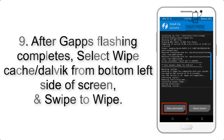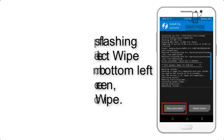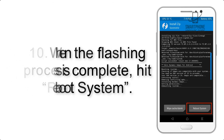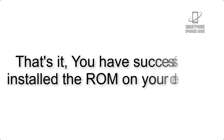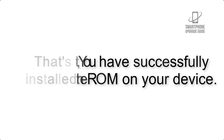Step 8: Flash the GApps zip package in the same manner. Step 9: After GApps flashing completes, select Wipe Cache and Dalvik from the bottom left side of the screen and swipe to wipe. Step 10: When the flashing process is complete, hit Reboot System. That's it — you have successfully installed the ROM on your device.